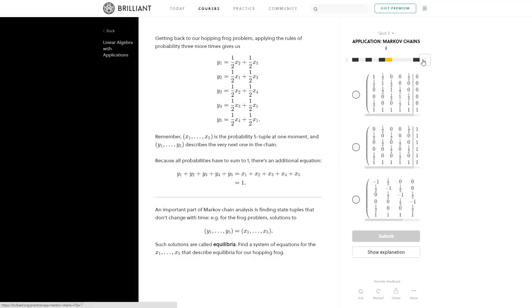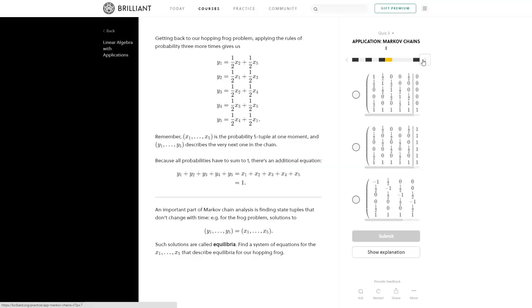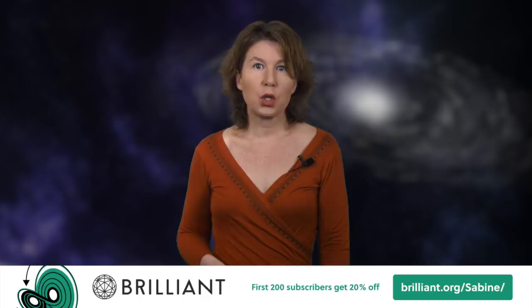With Brilliant you can learn at your own pace and whenever you can find the time. And all their courses will challenge you with questions so you can check your understanding along the way. If you want to try it out, use our link brilliant.org slash sabine and sign up for free. The first 200 subscribers using this link will get 20% off the annual premium subscription.